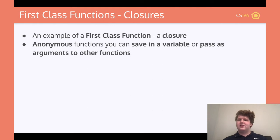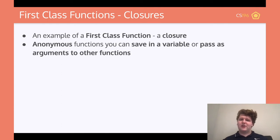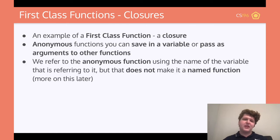First class functions are typically referred to as closures or anonymous functions. They're called anonymous functions because you can save them in a variable and pass them to other functions. They aren't functions that have a name like your typical function — we refer to the anonymous function using the name of the variable that it's referring to, but it's not a named function.